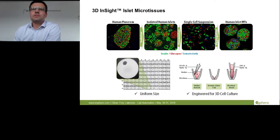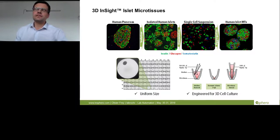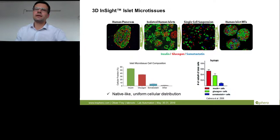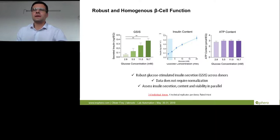What we optimized is taking the human pancreas, isolating human islets, dissociating them into single-cell suspension, and then re-aggregating them into so-called human islet microtissues cultured in a 96-well plate, addressable using standard pipetting tools in a reproducible and reliable way. Re-aggregated human islet microtissues have the same cell composition as the native human islet. With increasing glucose concentration we have increased insulin secretion — a very physiological response.